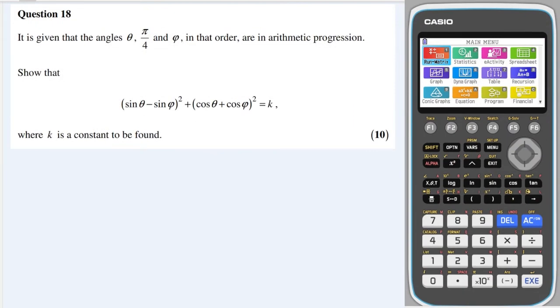Okay, two ways to do this question. First off, let's look at this information here. That tells me it's in an arithmetic sequence, so if I write them out in order, like this, then I know that there's going to be a common difference between each of them, which is the same. So let's call it x. I could then write theta as pi over 4 minus x, and I could write phi as pi over 4 plus x.